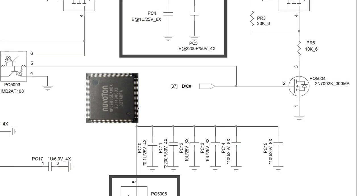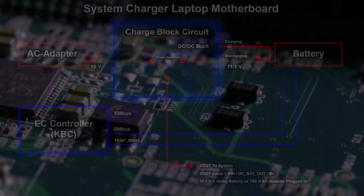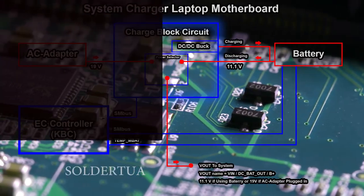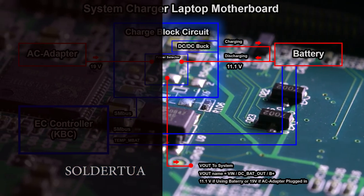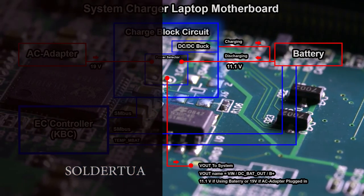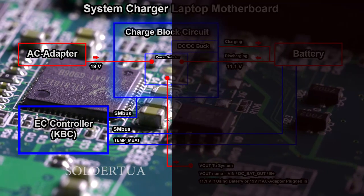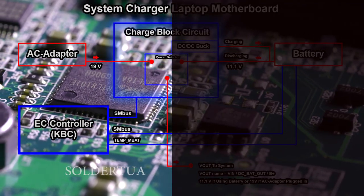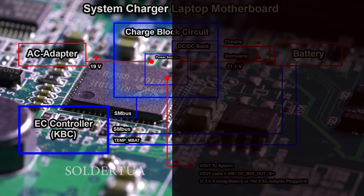When does the D/C# signal change from low to high? When we install the battery, even though the EC controller is working, this signal remains in a low condition. But when we plug in the AC adapter, or when we press the power button, the EC controller changes the signal from low to high via the GPIO pin. This video only discusses the laptop turning on using power from the battery without the AC adapter. The next video will cover what happens when we plug in the AC adapter and how the charger block circuit transfers the power source from the battery to the AC adapter.